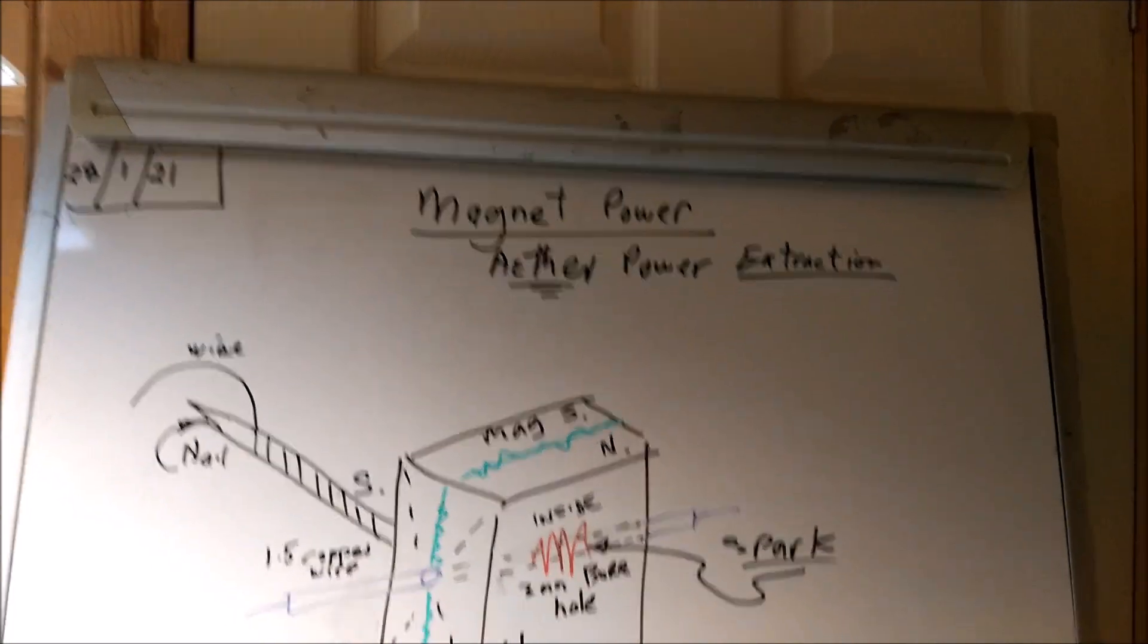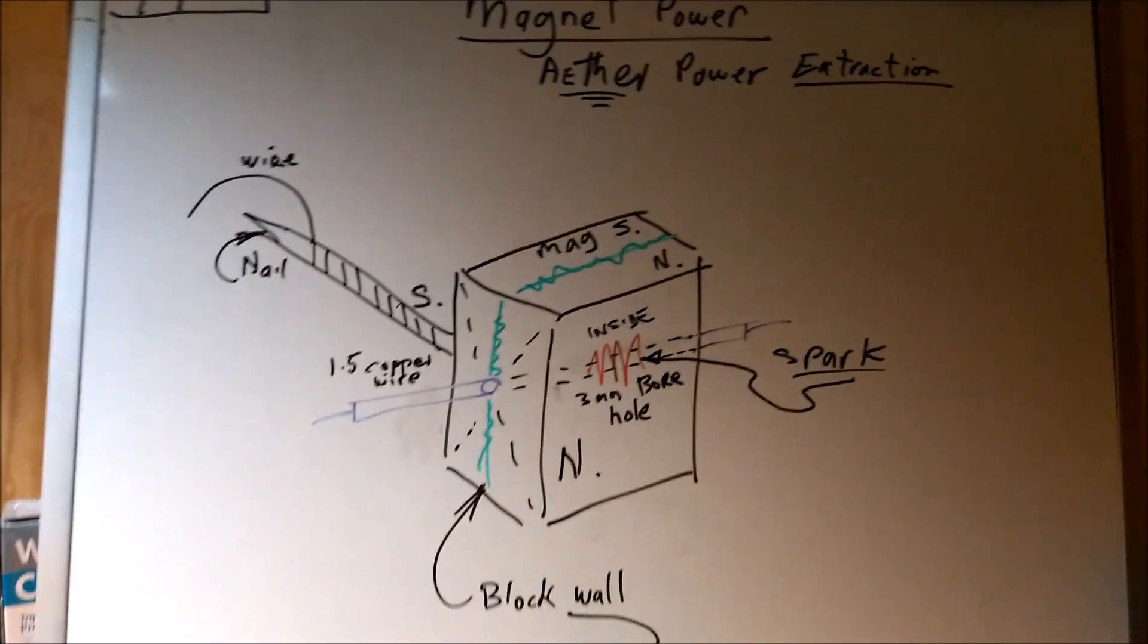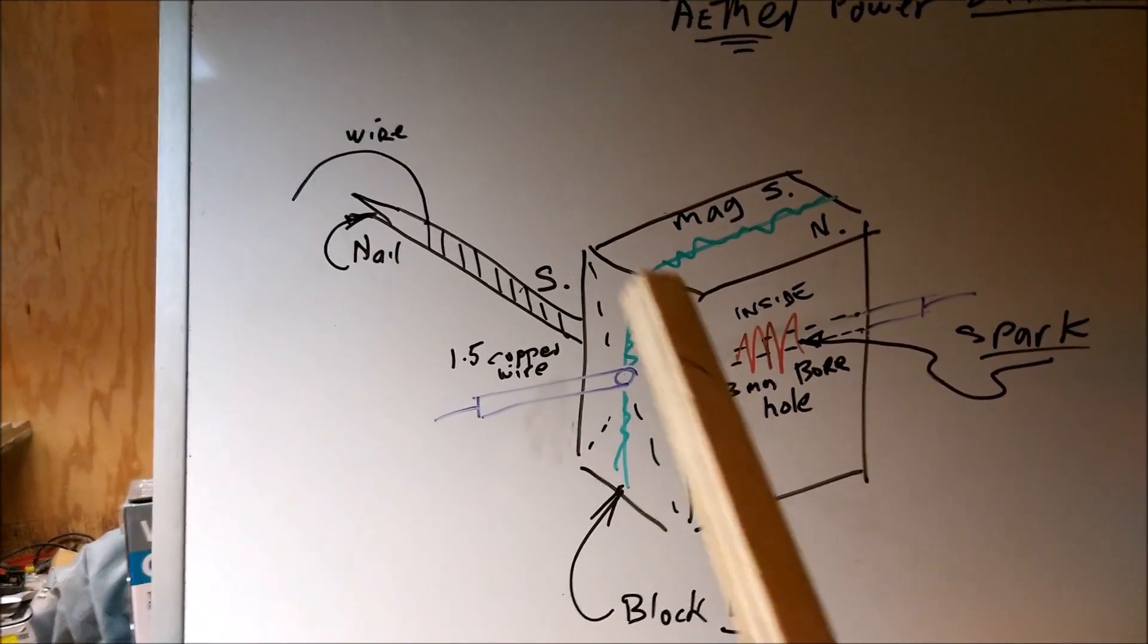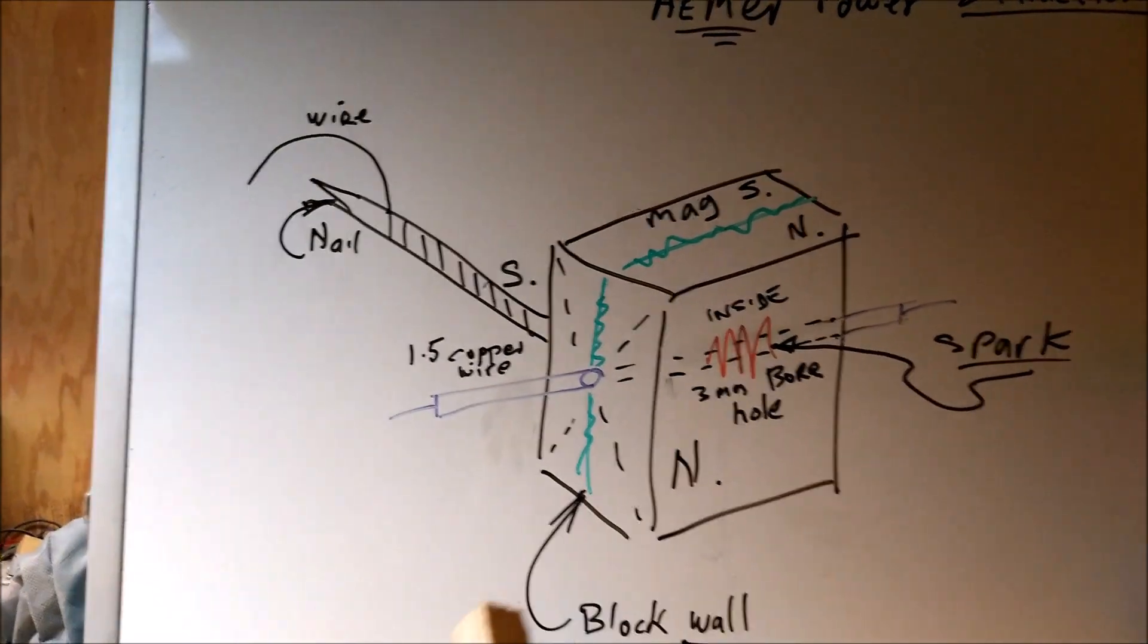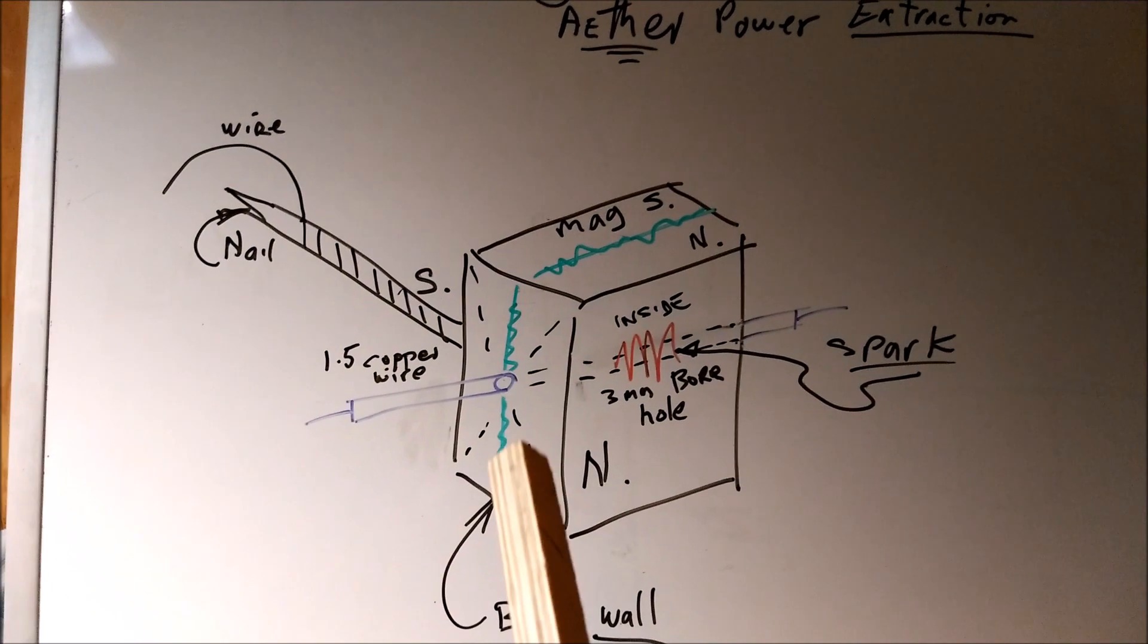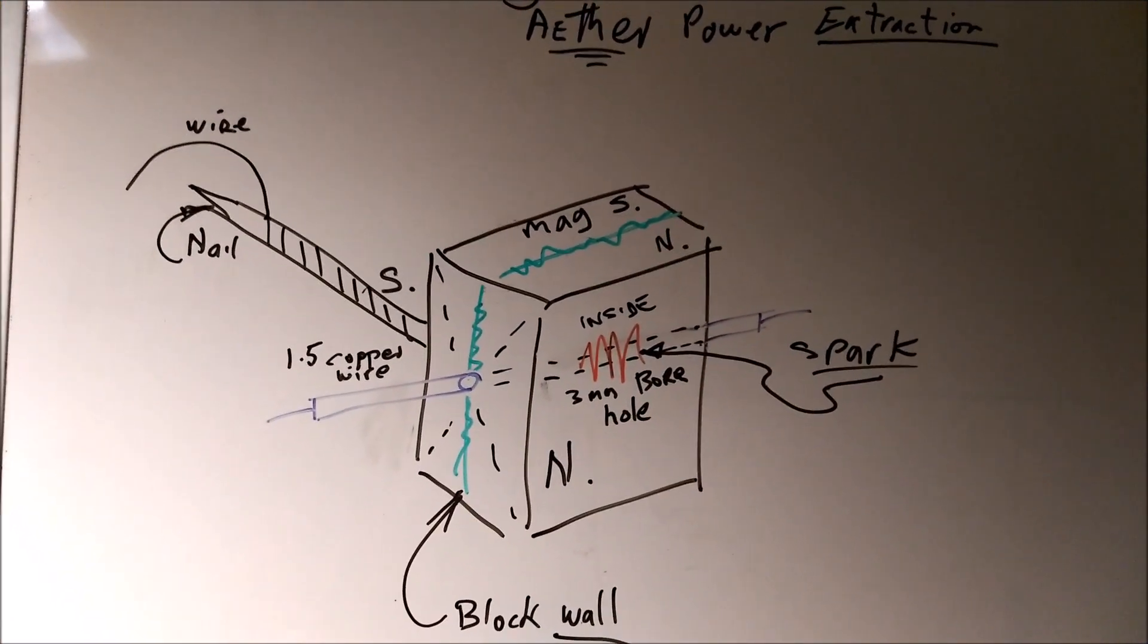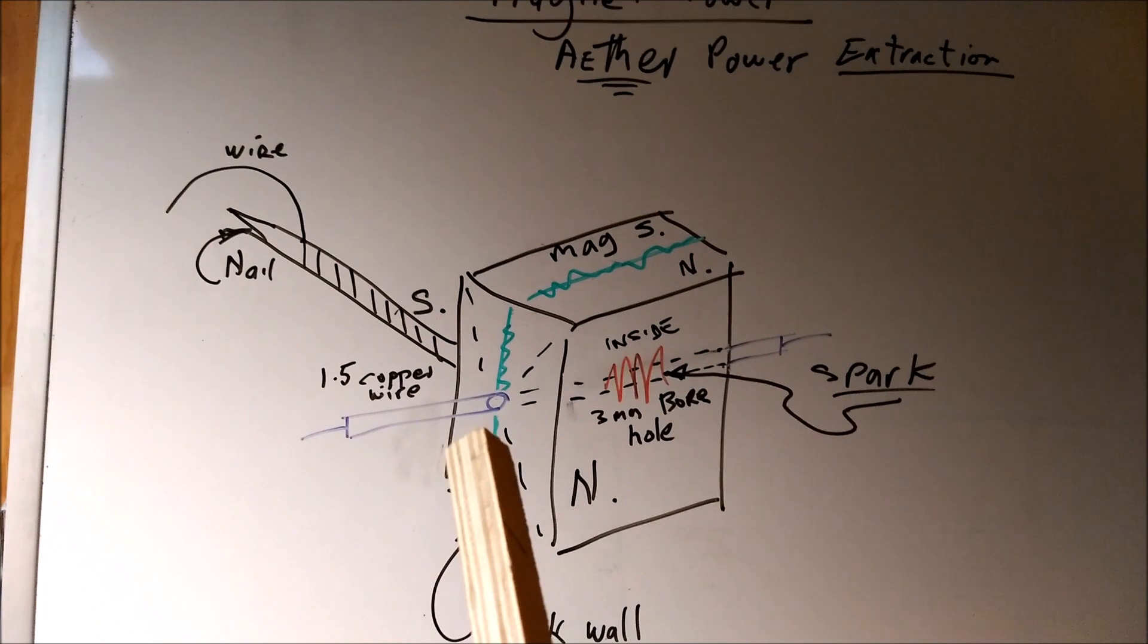That's ether power extraction from a magnet. What we've got on the board today is a cube magnet with north on this face and south on the other face with the Bloch wall in between. It's a neodymium magnet and I've drilled a hole directly through the magnet on the Bloch wall. It's very difficult to drill because it's quite hard, but I did it. I put a three millimeter hole through at that point there.